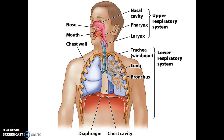Here we see a diagram of our respiratory system — our nose and mouth leading to our pharynx, leading to our trachea, our bronchi, and then to the right and left lung. The diaphragm, which is a sheet of muscle, plays an important role in allowing us to breathe, and we'll discuss the diaphragm in greater detail in just a few moments.